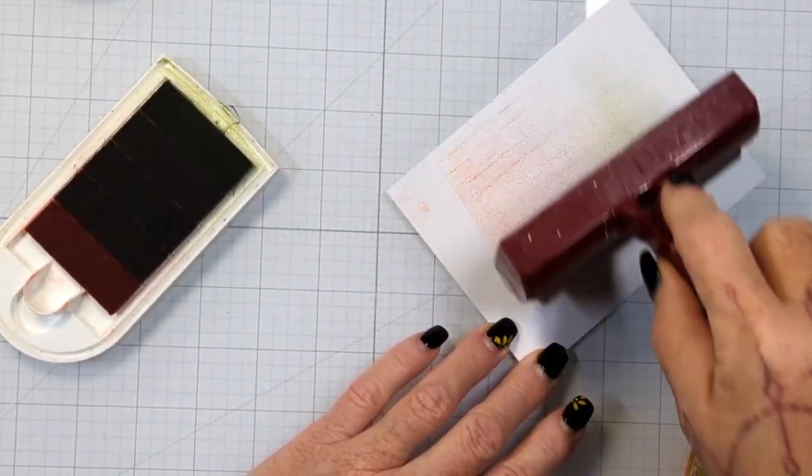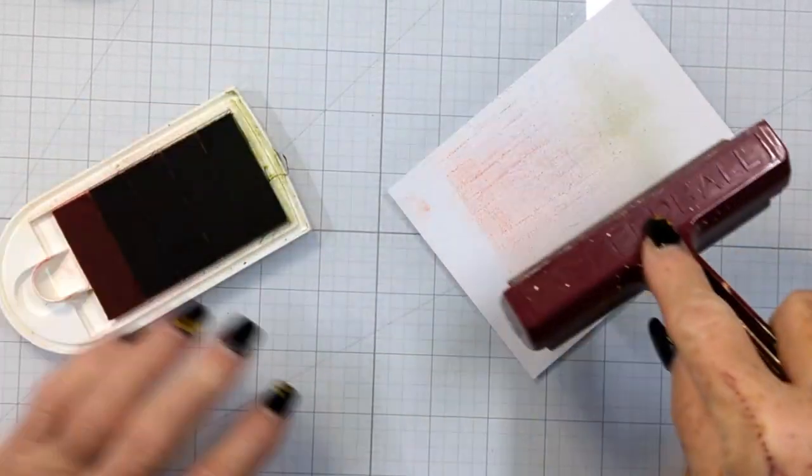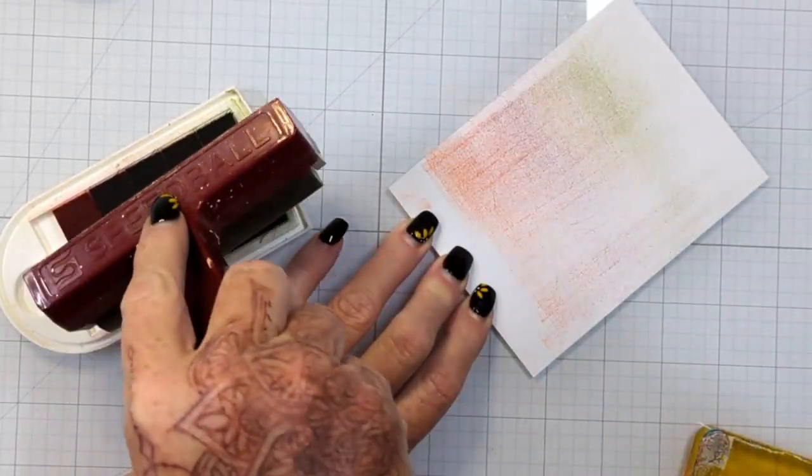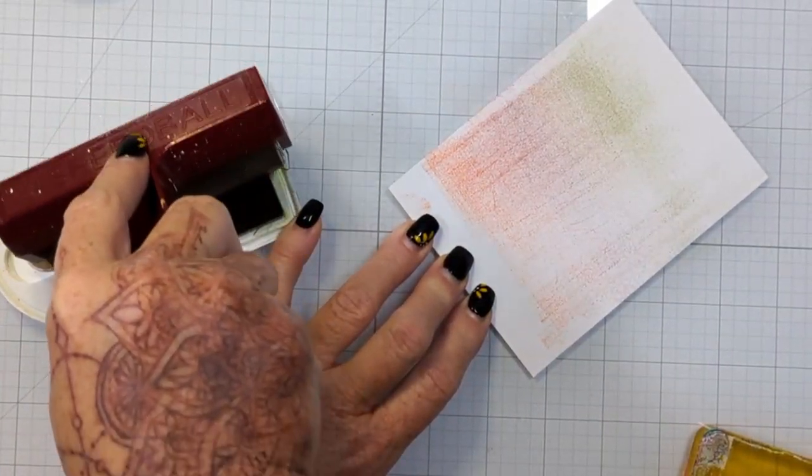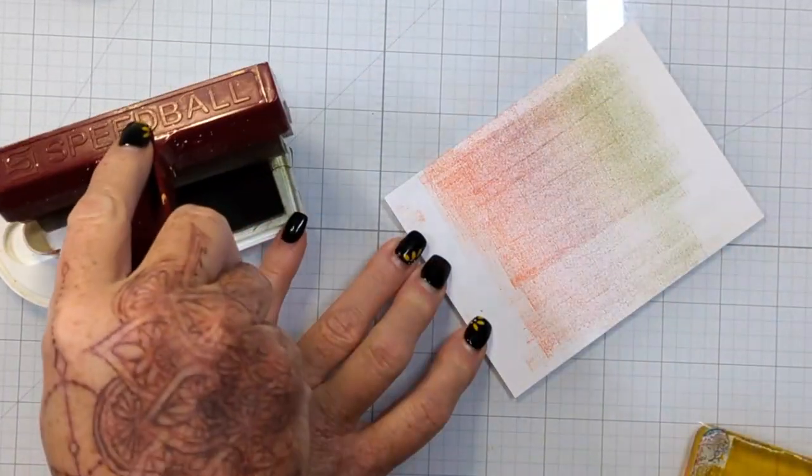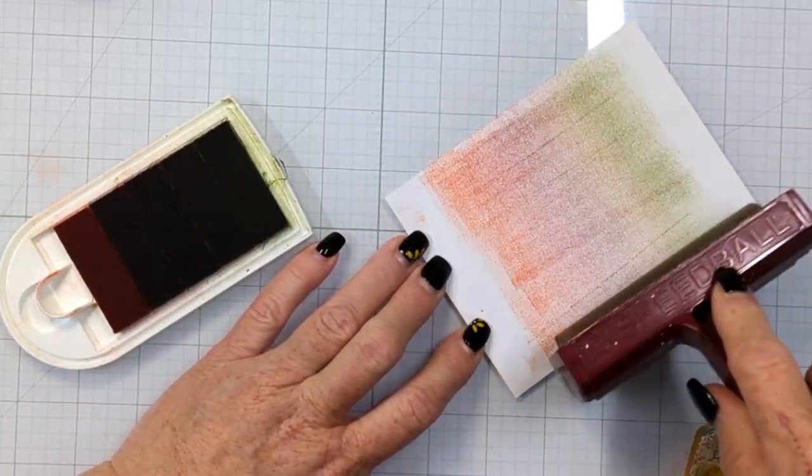So this Kaleidocolor ink pad is so unique. I have several. I apologize that this one is so messy and dirty. It's mine. It's from my stash. I've had it over 20 years. Now you can re-ink these individual pads because that's what it's made up of: five individual ink pads. I have never re-inked mine and it's still going strong.